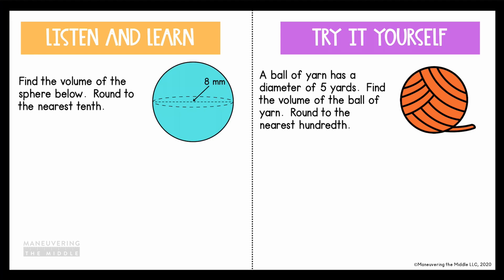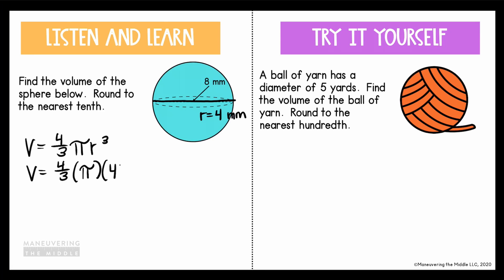Find the volume, rounded to the nearest tenth. Here's our formula. Looking at this sphere, they gave us the diameter, but we need the radius. If the diameter is 8, the radius is half of 8, or 4. Substituting the radius into the formula: 4 thirds times pi times 4 to the third power, rounded to the nearest tenth, gives us 268.1 millimeters cubed.